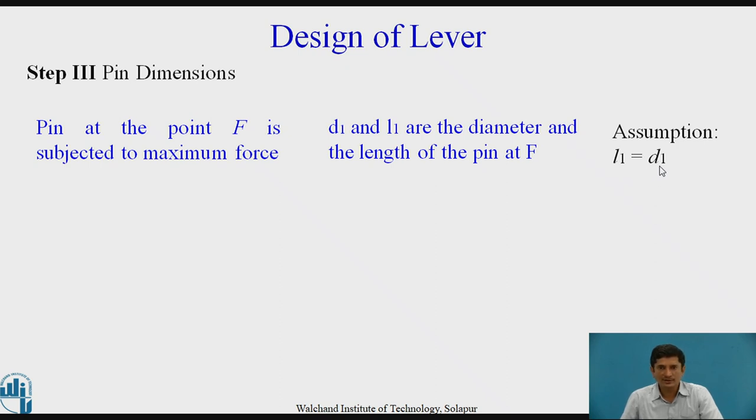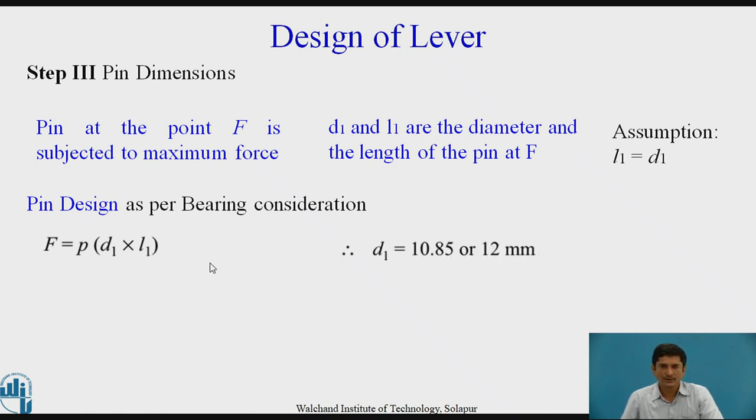If we assume L1 equals D1, the pin dimensions are obtained as per the bearing considerations. Force F equals bearing pressure multiplied by D1 into L1 which is the projected area of the pin. For bearing consideration we need to take the projected area which is given by D1 square. Therefore D1 is around 10.85 mm.